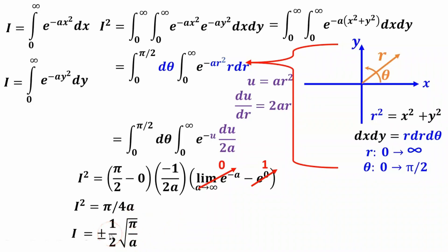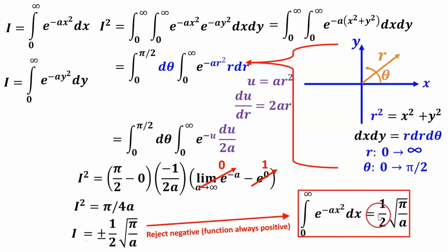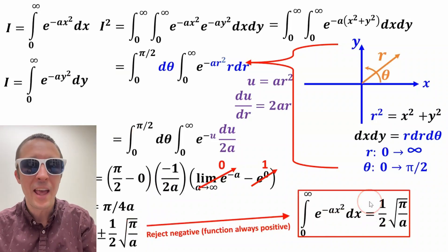But this plus or minus is not much of a bother because this function is always above the horizontal axis, right? So we have to accept the positive only. We reject the negative since the area under the curve is always going to be positive. And at this point, this is our integral in all its glory. And we're done.